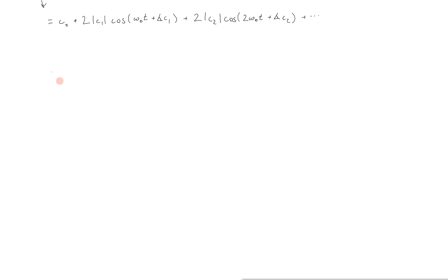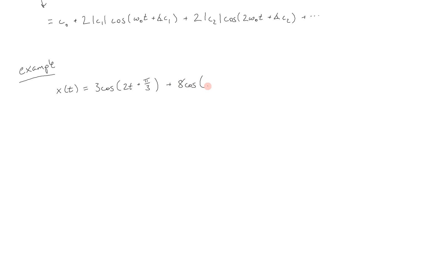Let's look at an application through an example. We'll take a signal x of t equal to 3 cosine of 2t plus pi thirds, plus 8 cosine of 10t minus pi fourths — just a summation of two cosines. Suppose we want to find its Fourier series. The first thing is that we are going to define the fundamental frequency omega naught as 2. Based on that, we can just match terms to our summation from before.